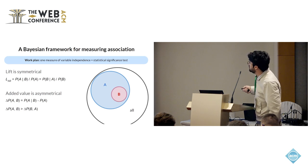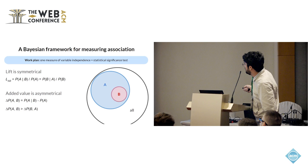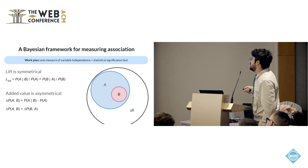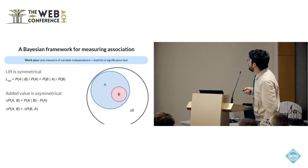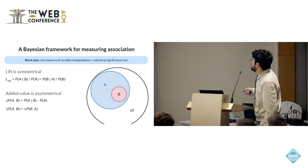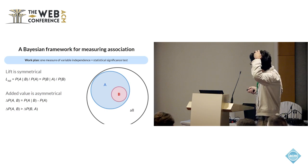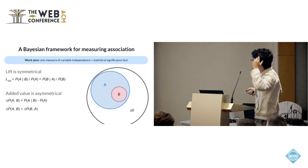Instead, I decided to use added value, which is an asymmetrical measure. Added value is the difference between the conditional probability and the marginal probability of finding a variable. Because it is asymmetrical, the added value in the case where B is a subset of A is larger than in the opposite situation where A is a subset of B. This lets you differentiate between the two situations.